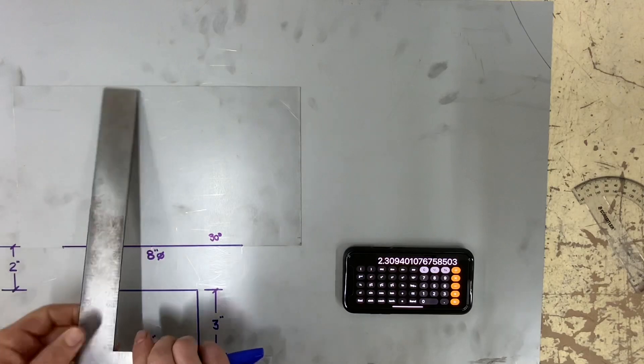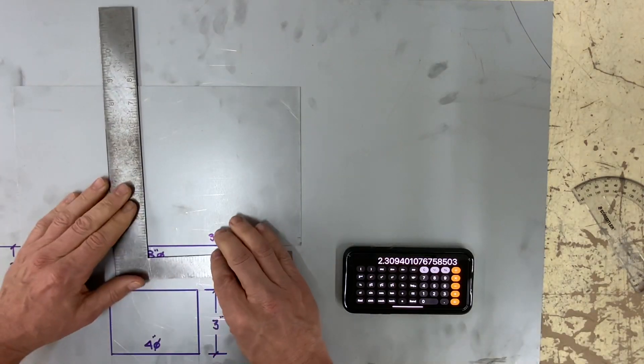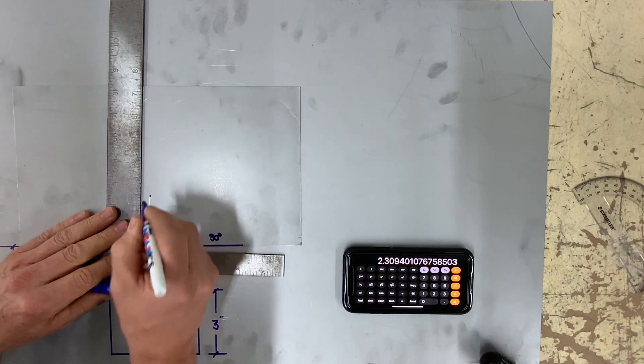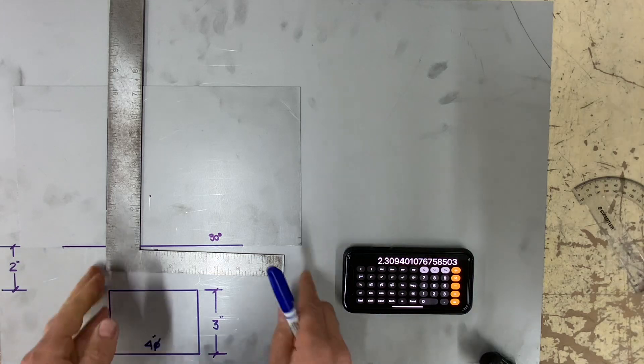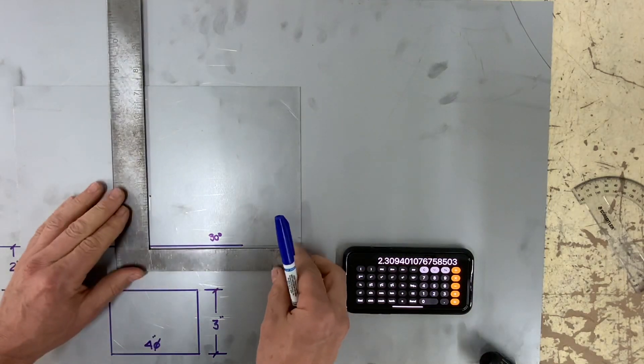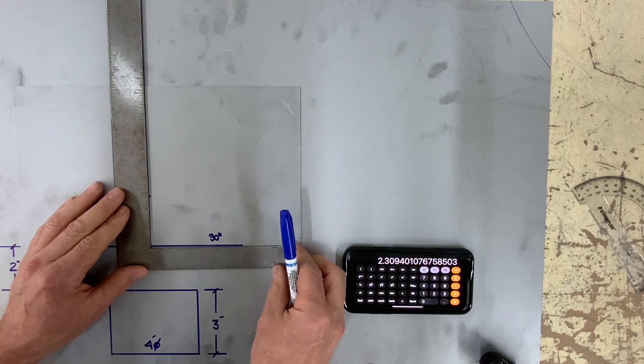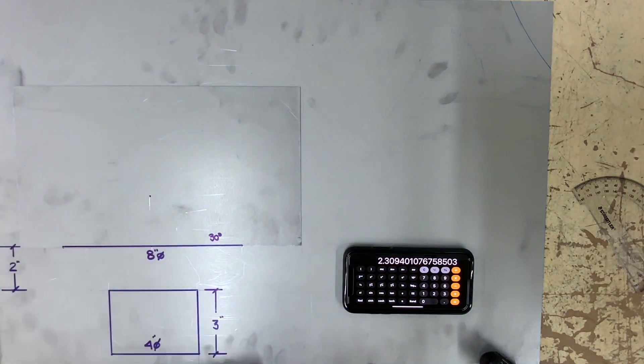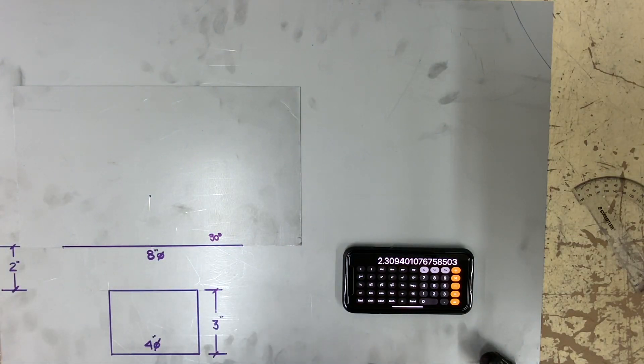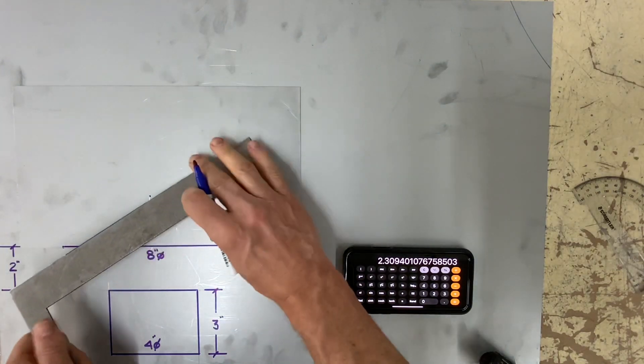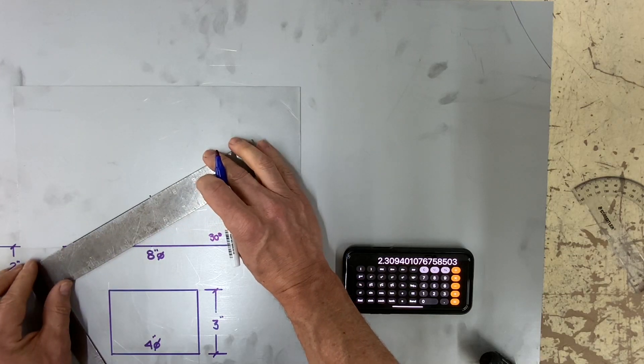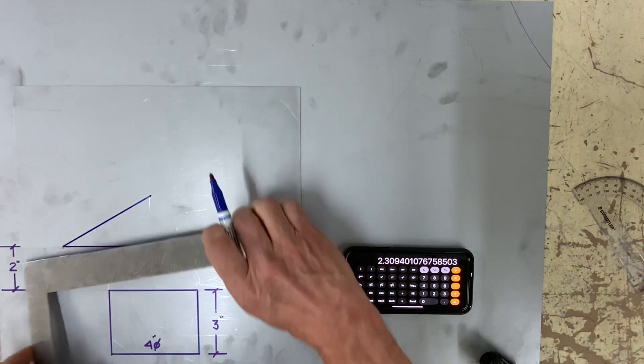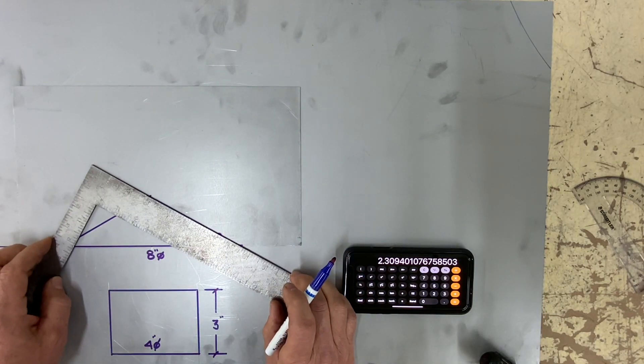So now I'm going to draw a 90 degree perpendicular, exactly in the center of the eight inch, 2.309, which is approximately two and five sixteenths. And once you've located that point, you can now connect to the ends of your caps and you should have a 30 degree angle.